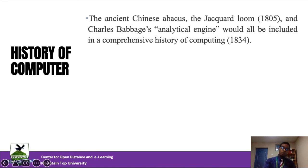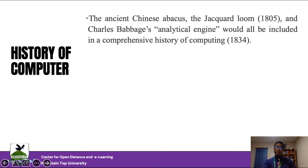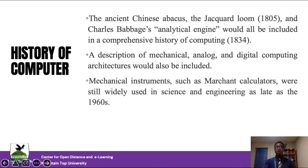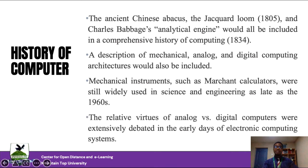Now that we understand what the computer is, let's look at the history of computing. The first concept about processing started from the Chinese Abacus. We also had the Jacquard Loom and Charles Babbage, who made a very close attempt by creating what was called an analytic engine — though his idea did not come to fruition. A description of mechanical, analog, and digital computer architectures would later be included in computer science. We later had mechanical instruments such as merchant calculators being created in the 1960s.